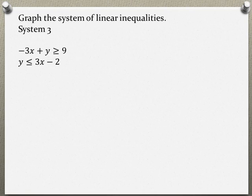Graph the system of linear inequalities. We need to make sure that both inequalities are in slope-intercept form. The second inequality is, but the first one is not. So we need to rewrite the first one and get y by itself.